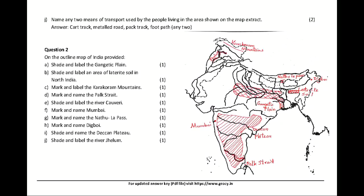Question 2. On the outline map of India provided: A. Shade and label the Gangetic Plain. B. Shade and label an area of laterite soil in North India. C. Mark and label the Karakoram Mountains.